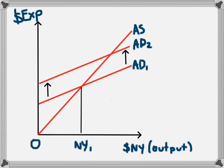And as a result of this, we'll get a new level of national income. It will increase from NY1 to NY2.